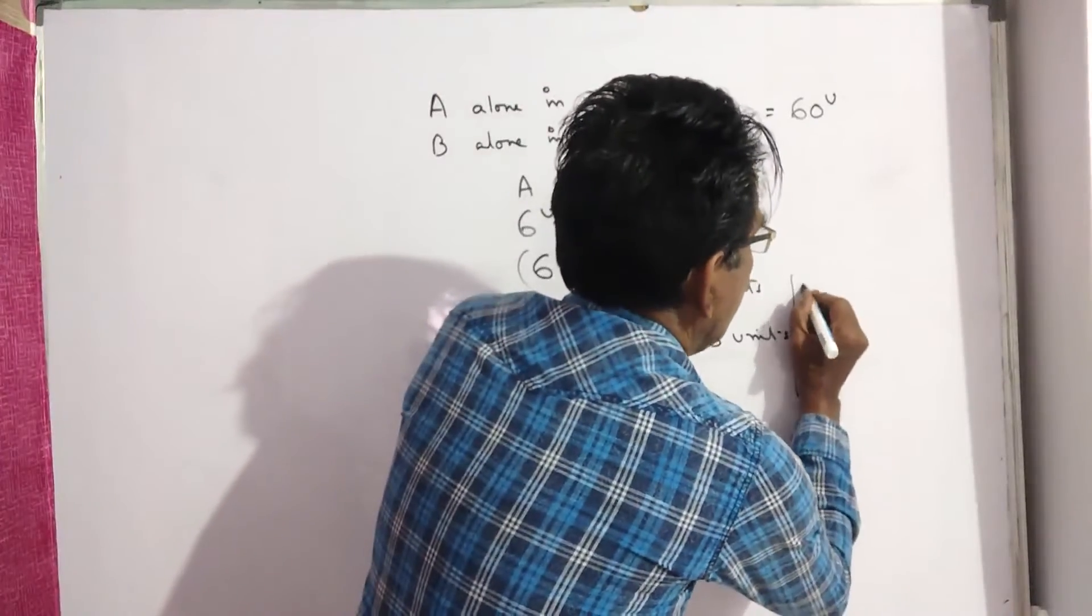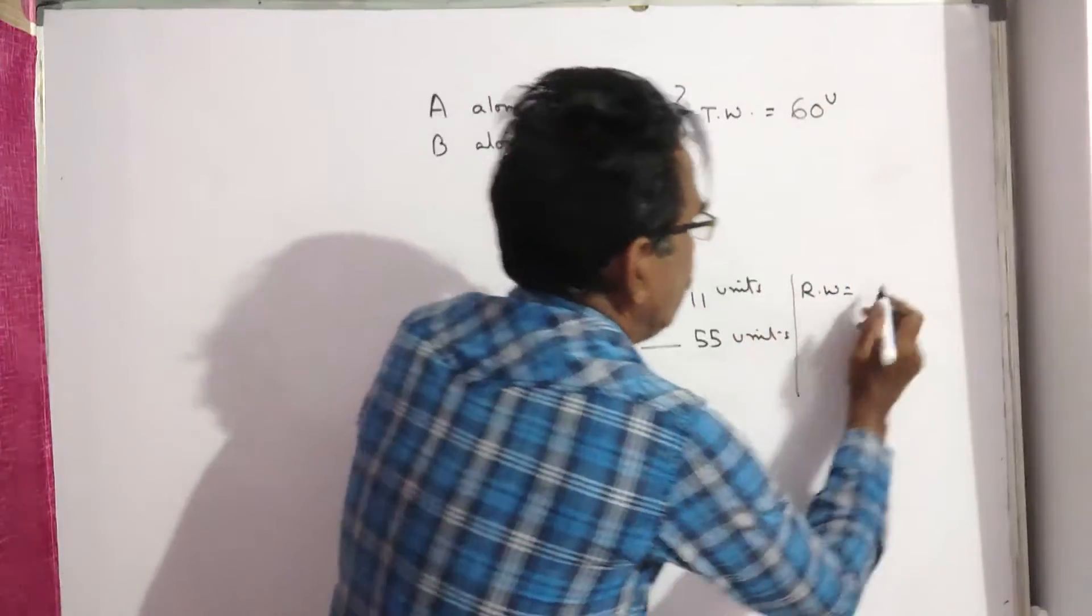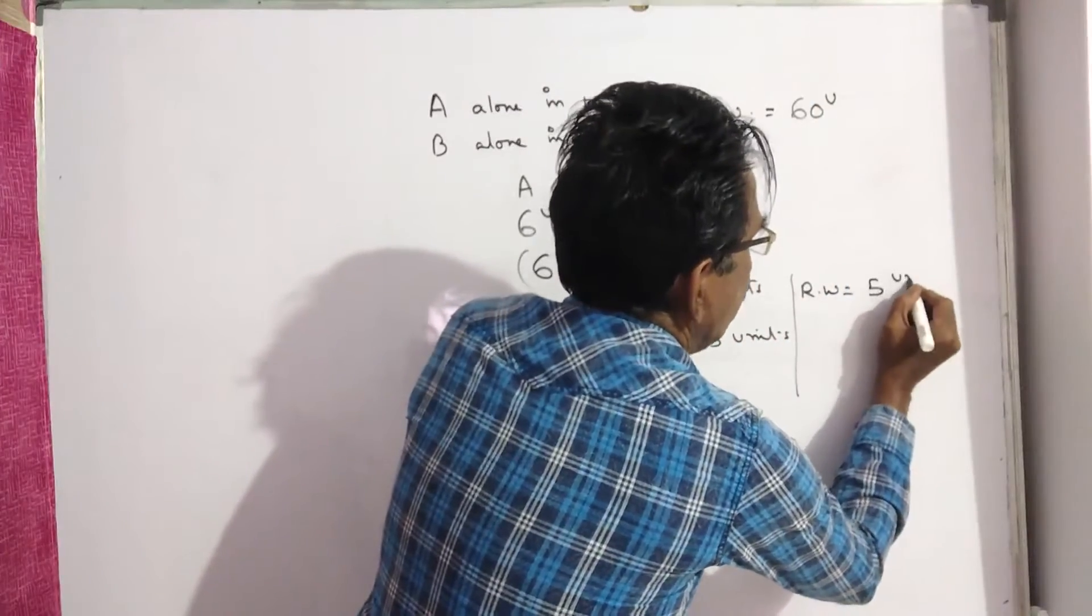And the remaining work is equal to 60 minus 55, which is 5 units.